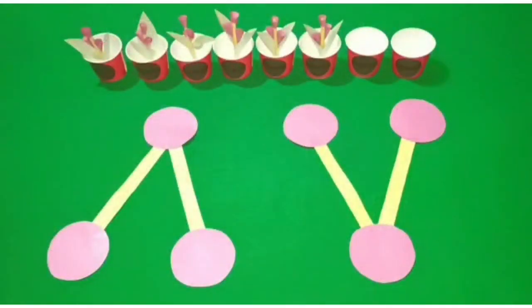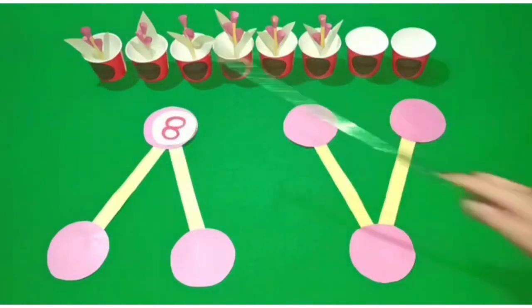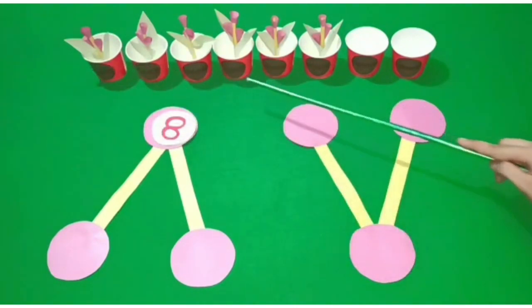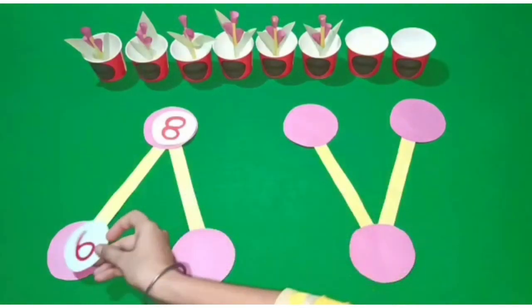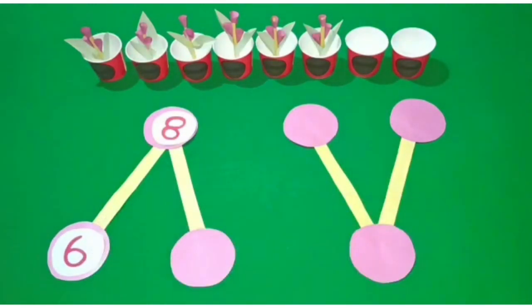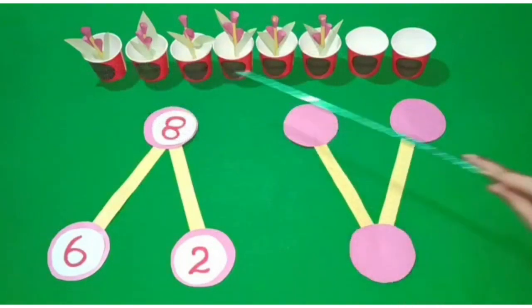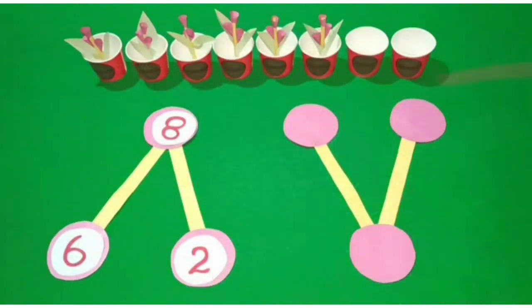Students, there are 8 pots. Let's see how many pots have flowers. Count with me: 1, 2, 3, 4, 5, 6. There are flowers in 6 pots. See, how many pots do not have flowers? Yes — 2 pots. No flowers in 2 pots. 6 out of 8 pots have flowers and 2 pots do not have flowers.